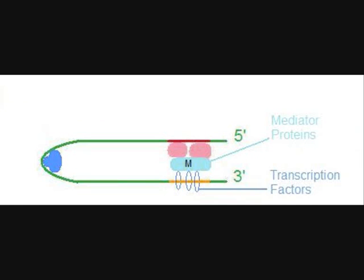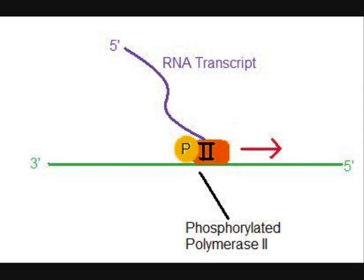Once at the promoter, the activation proteins bind to mediator proteins and a set of general transcription factors. Together, these help correctly assemble the transcription initiation complex and guide it into place on the promoter region. This enables faster clearance of the promoter region by the polymerase and an increased rate of transcription.